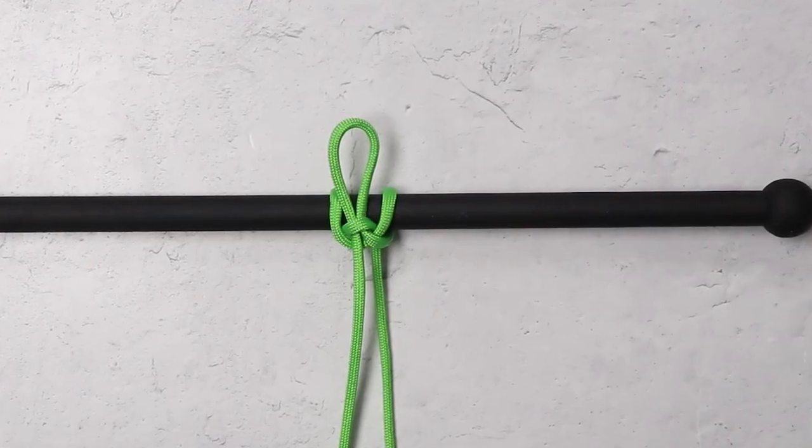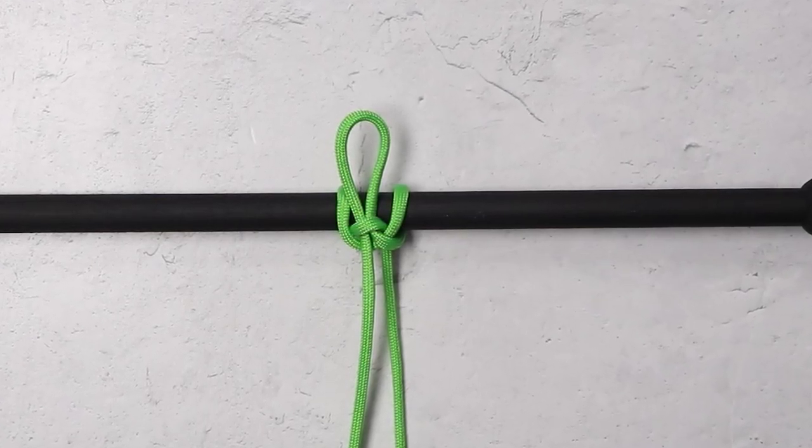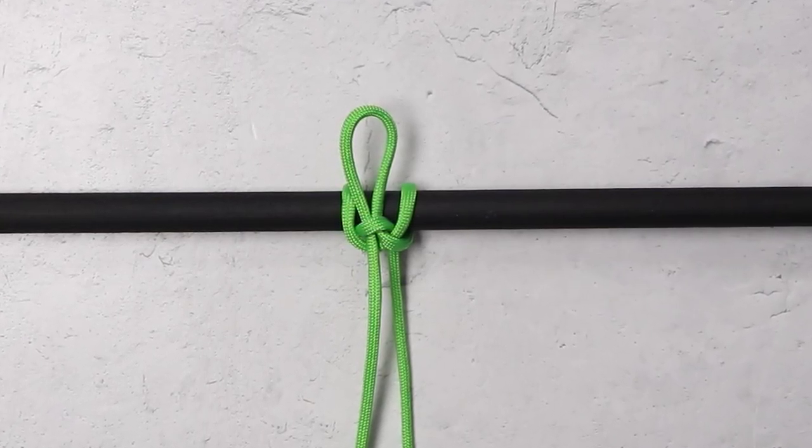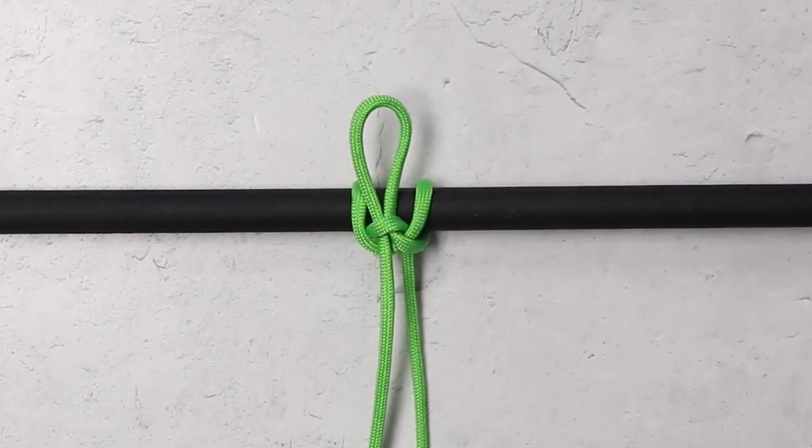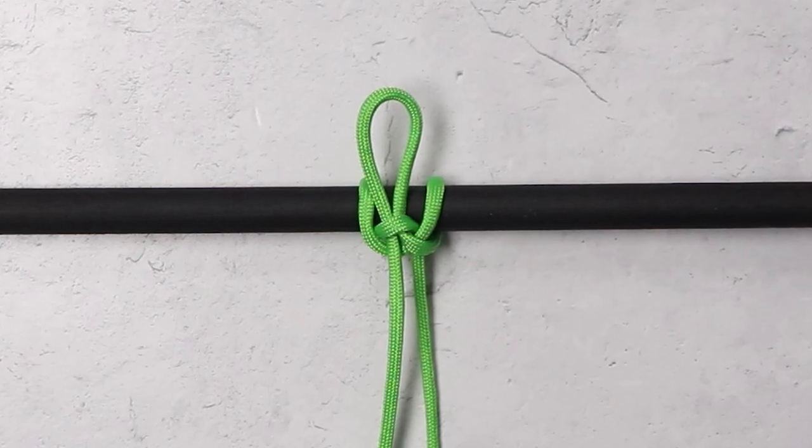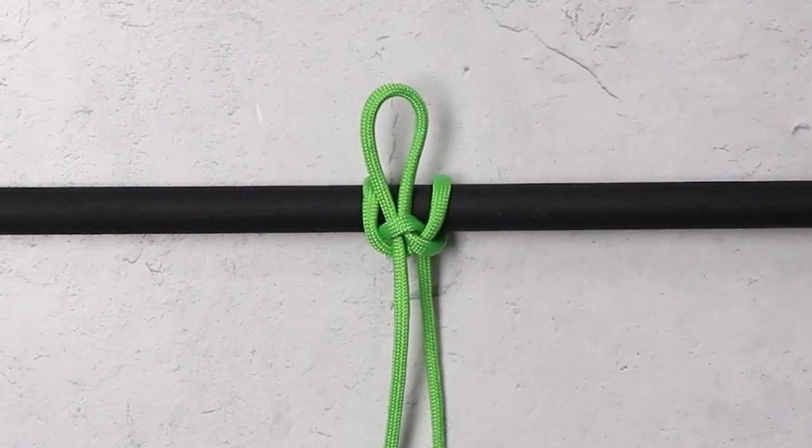But seriously, the highwayman's hitch is a really great knot if you are trying to stabilize something on the go and you need to release it quickly. A good example of that would actually be a kayak. So let's say you're trying to stabilize it, getting in or out, you can quickly pull this out and get going.